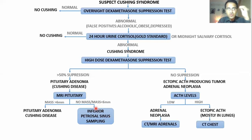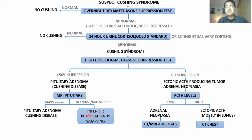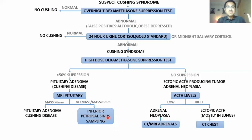Inferior petrosal sinus sampling is done because sometimes there is no adenoma in the pituitary, but somewhere else in the brain there is a mass producing excess ACTH. If such a mass exists outside the pituitary, it drains into the inferior petrosal venous sinus. You take a blood sample from there — if ACTH levels are elevated in the inferior petrosal sinus, it means a brain mass outside the pituitary is secreting excess ACTH.